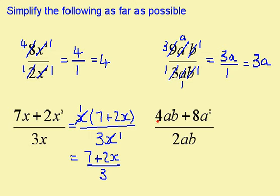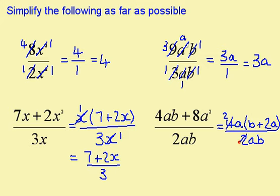Again on this one, I need to start by factorising. I can take out a factor of 4a. This leaves me with b here and 2a here. This is still 2ab. Now 2 goes into 4 twice, 2 goes into 2 once, a goes into a once, a goes into a once. So I have 2 times 1 times b plus 2a, which is 2b plus 2a, over 1 times 1 times b, which is b.